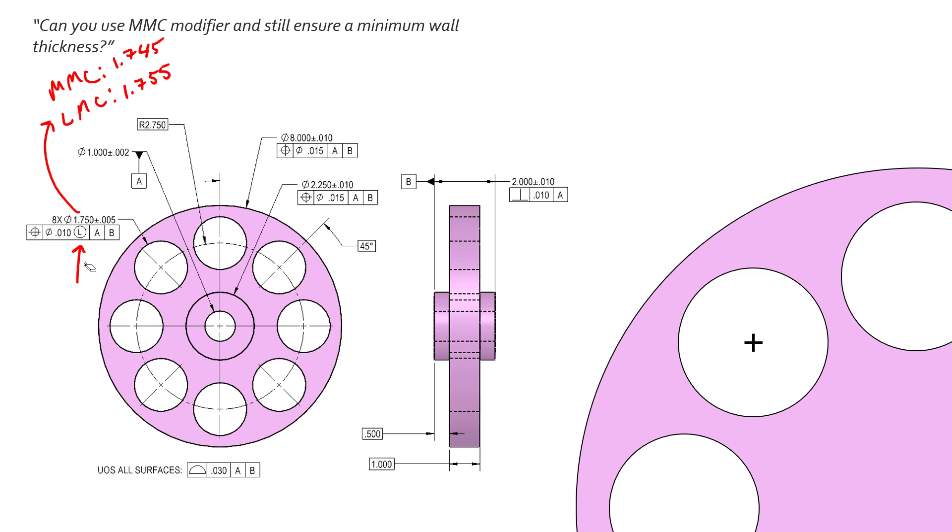We see here on this example we're calling out LMC. So if you read the feature control frame, this feature has a position tolerance diametrically of 10 thousandths when it measures at LMC with respect to A and B. Now we know we get bonus tolerance as we deviate away from the modifier.